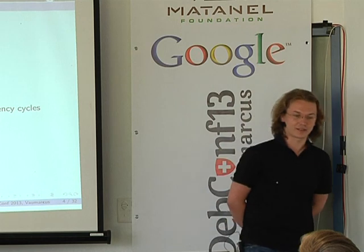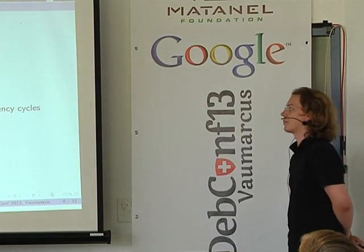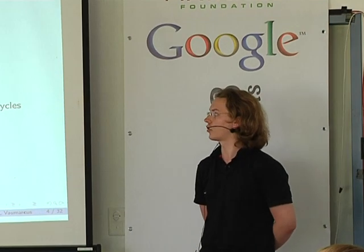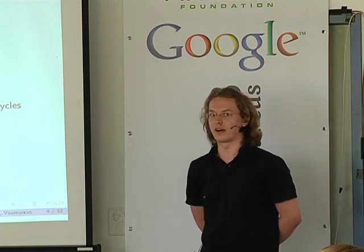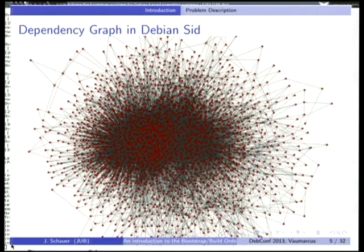In fact, you don't run into dependency cycles as much as you run into strongly connected components, which is the part of a graph where all vertices are in a cycle with each other. Those things can be pretty huge, like this one — which is how it looks right now. Every time Debian is ported, somebody has to solve that by hand. It's called a hairball, which makes sense because it looks pretty bad. That one has only 1,000 nodes and a few 10,000 edges.